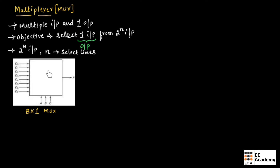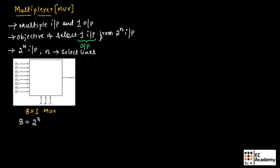This is the block diagram of an 8×1 multiplexer. This multiplexer has 8 inputs and produces 1 output. It has 3 select lines: A, B, and C. Depending upon the value of the select lines, the multiplexer will select one input and that input will appear at the output.